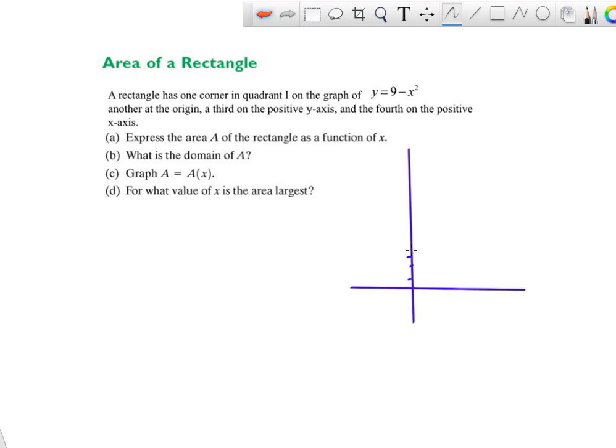So 1, 2, 3, 4, 5, 6, 7, 8, 9. We're here. 9 minus x squared, so if we're at 3, we'd be at 0. And if we're at 3, we'd be at 0 here. It has 1 corner in quadrant 1, so I don't really care about this part. I just want this part because it says I'm always in quadrant 1.